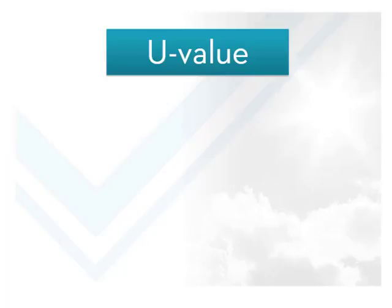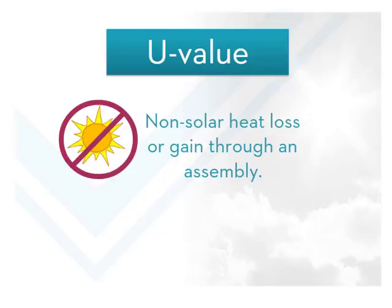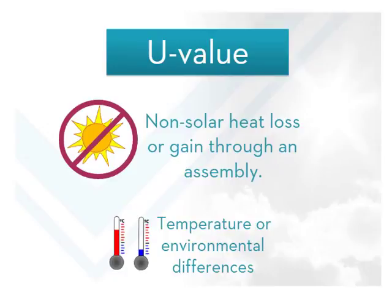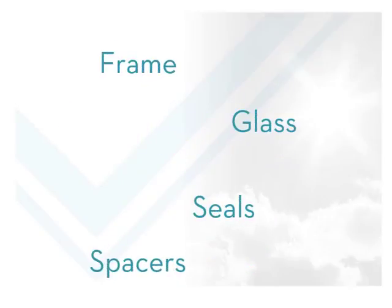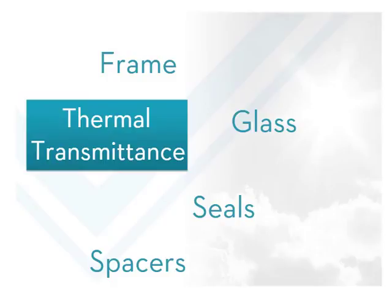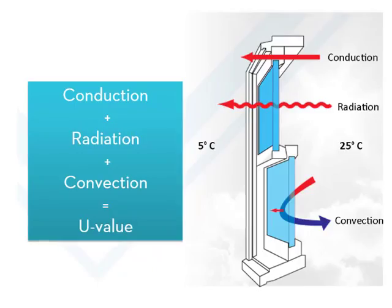What is U-value? By definition, U-value is the measure of the rate of non-solar heat loss or gain through a material or assembly due to the differences in temperature or environmental conditions between the inside and outside of the window. The rate of heat transfer is indicated in terms of the U-value of the window assembly, which includes the effect of the frame, glass, seals and any spaces. Simply put, it's a measure of thermal transmittance — how well a window product prevents heat from escaping by factoring in the combination of conduction, radiation and convection.